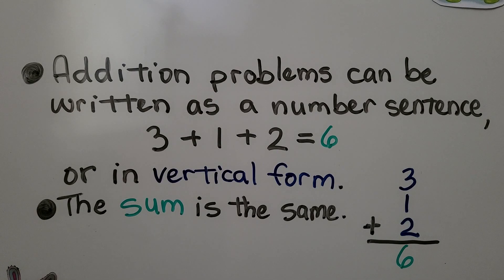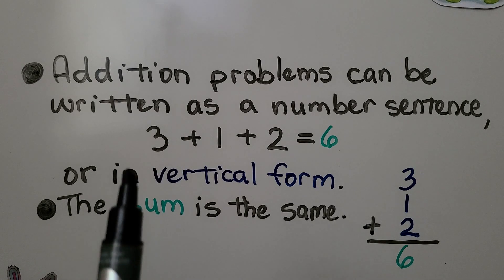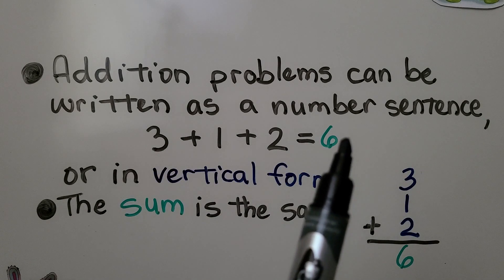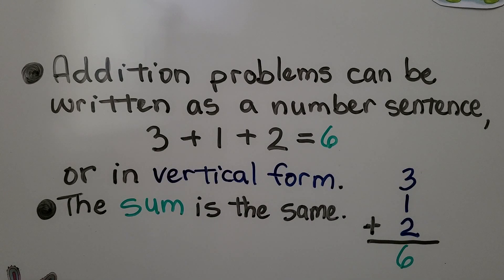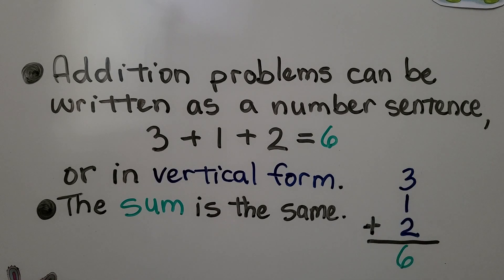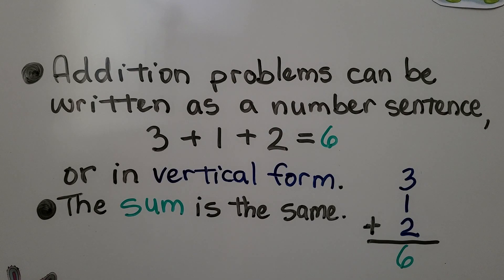It's written horizontally, meaning it goes from side to side. We can also write it in vertical form, which means it's going up and down. The sum is the same whether we add it as a number sentence or vertically.